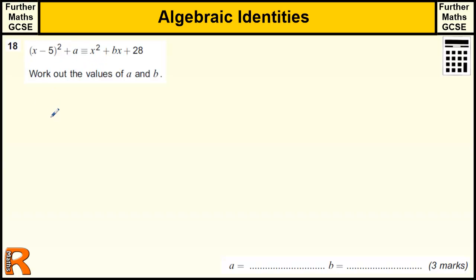So if we multiply out this left-hand side, we've got x minus 5 times x minus 5.